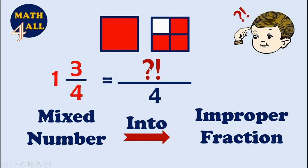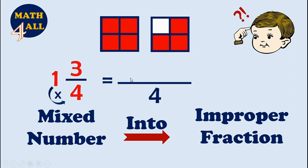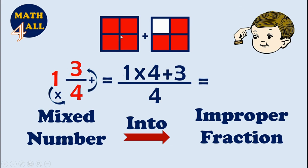Now, how do we get the numerator? We need to know how many equal parts we have in this fraction. You will multiply the whole number by the denominator. Let's multiply: one by four. So we will break this one into four parts. As we see, we have one times four, and then we will add the number of parts we have in the fraction — one times four plus three.